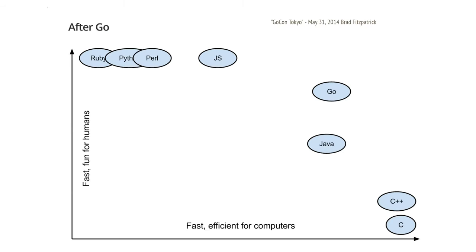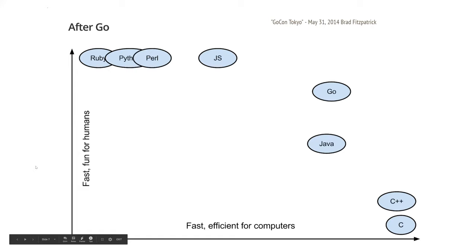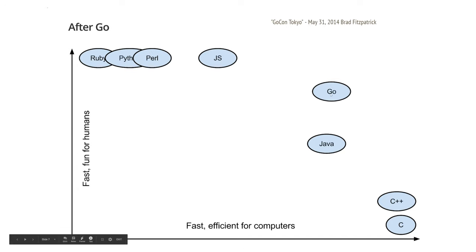Looking at where programming languages sit on a chart of 'fast for humans' versus 'fast and efficient for computers': Python is popular because it's very easy to get started with. Go sits in a sweet spot — it's fast and efficient for computers because it compiles, and it's also fast and fun for humans. Ruby has mixed feelings; JavaScript I'd put somewhere below my desk.